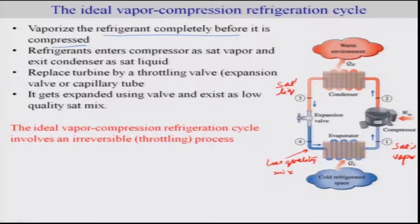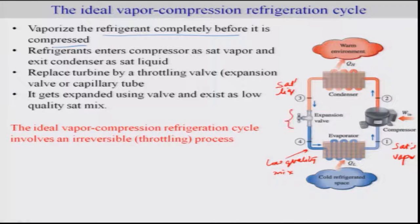What we did is avoid the issue with the compressor by considering saturated vapor, compressing it to superheated vapor. We also avoided the issue with the turbine by replacing it — which is more costly — with an expansion valve. This gives us the ideal vapor compression refrigeration cycle. It should be noted that this involves friction, and hence this cycle, which uses an expansion valve, is an irreversible cycle.